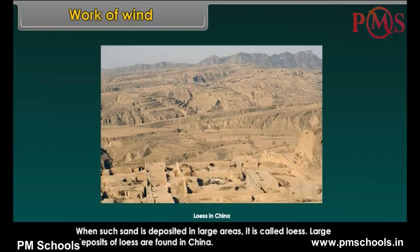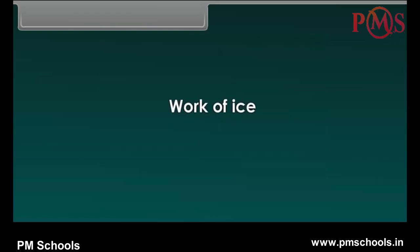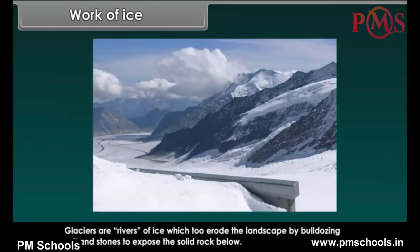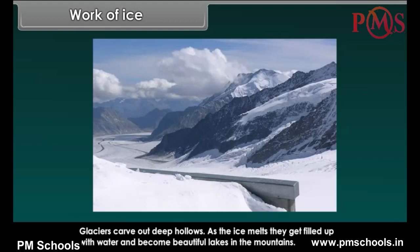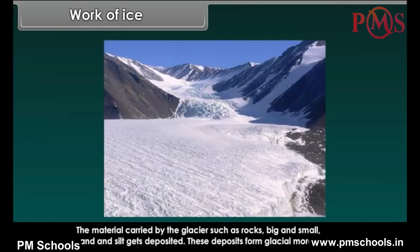Work of Ice. Glaciers are rivers of ice which erode the landscape by bulldozing soil and stones to expose the solid rock below. Glaciers carve out deep hollows. As the ice melts, they get filled up with water and become beautiful lakes in the mountains. The material carried by the glacier, such as rocks big and small, sand and silt, gets deposited. These deposits form glacial moraines.